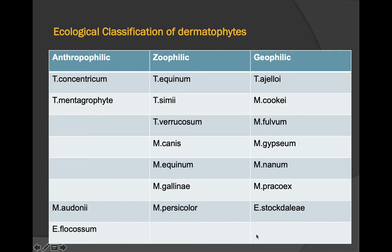Additional species include anthropophilic T. concentricum, T. mentagrophytes, M. audouinii, and E. floccosum. Zoophilic species include T. verrucosum, M. canis, M. equinum, and M. persicolor. Geophilic species include T. ajelloi, M. cookei, M. gypseum, and E. stockdaleae.